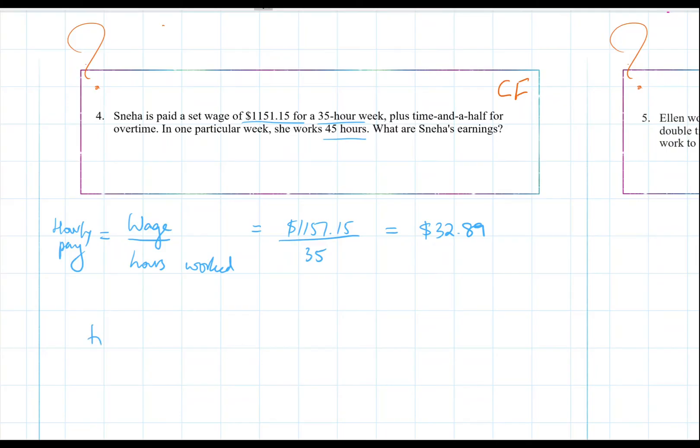So her time and a half pay will be 1.5 times this normal pay. And that is $49.335. So we'll round this 5 up and make this $49.34.